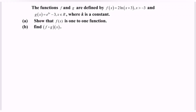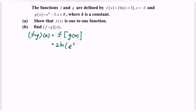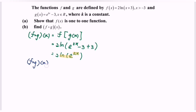Part B: find f∘g. So f∘g means substituting the function g into the function f. That gives 2ln(e^(kx-3) + 3). Simplifying: the -3 and +3 cancel, leaving 2ln(e^(kx)). Since ln(e) = 1, we bring down the power kx, so f∘g = 2kx.